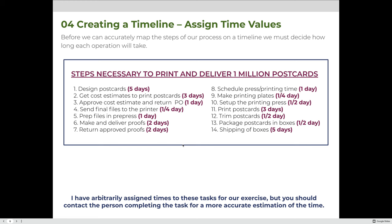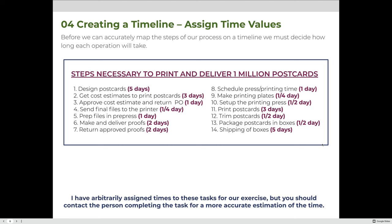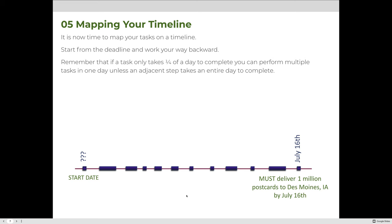Now that we know how much time each step will take, we're going to map it out on a timeline. We have a start date we don't know yet and an end date — the date our project needs to be done. We'll place a hypothetical start date at the beginning and the delivery date of July 16th at the end, then work backwards. Starting with step 14, we'll map out how long each step takes — step 14 is five days of shipping leading up to delivery.